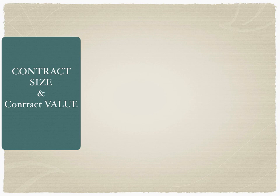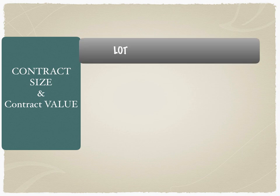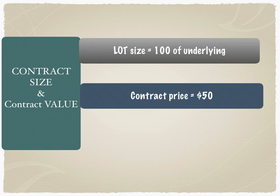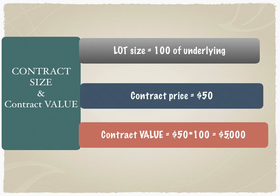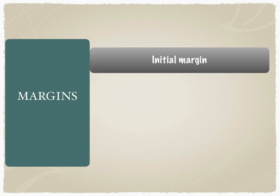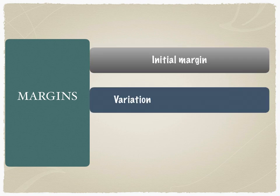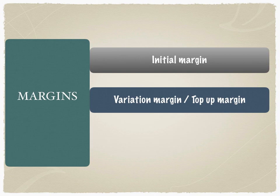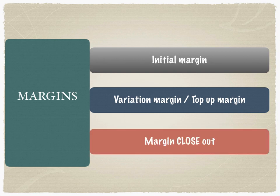Let's understand contract size and contract value, as these are important for all margin calculations. For example, if the lot size is 100 of the underlying asset and the contract price is $50, the contract value is 50 multiplied by 100, which equals $5,000. All margin calculations are based on contract size. The initial margin is a percentage of the contract size, and the variation margin or top-up margin is a percentage of the difference between the initial margin and the mark-to-market margin.